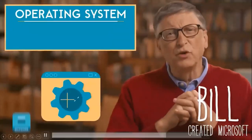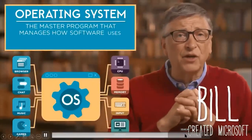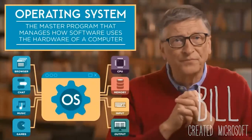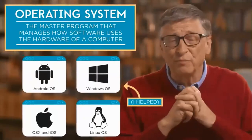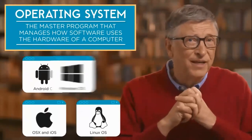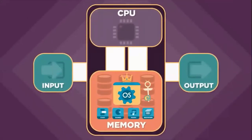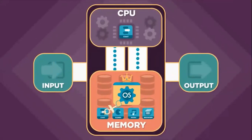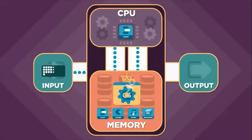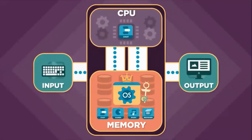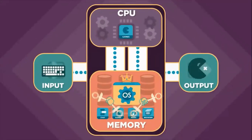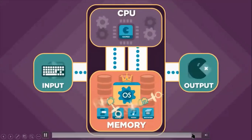The operating system is the master program that manages how software gets to use the hardware of the computer. It is a program with special abilities that lets it control the other software. It lets you install new programs by loading them into memory. It decides when a program is run by the CPU and whether that program can access the computer's input and output devices. And when you think your computer is running many programs at once, in reality it's the operating system quickly switching between programs, sharing the CPU for fractions of a second.